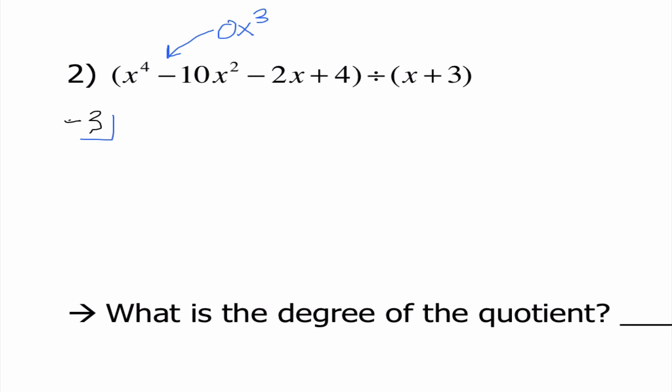My line of coefficients are going to be 1, 0, negative 10, negative 2, and 4. So I'm going to begin by bringing my 1 down. 1 times negative 3 is negative 3. When I add those, I get negative 3. Negative 3 times negative 3 is 9. When I add those, I get negative 1.